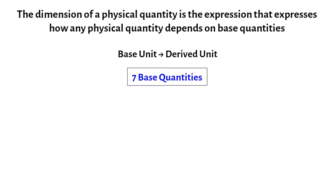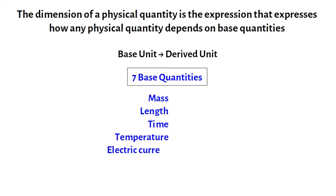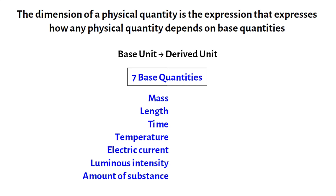These base quantities are mass, length, time, temperature, electric current, luminous intensity, and amount of substance. Where mass has the dimension of capital M, length as capital L, time as capital T, temperature as theta, electric current as capital I, luminous intensity as capital J, and amount of substance as capital N.